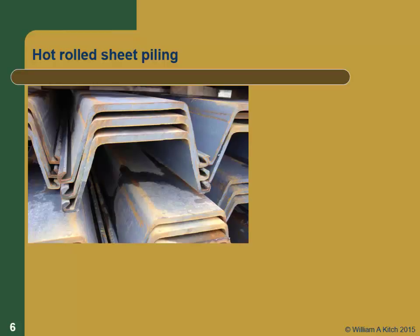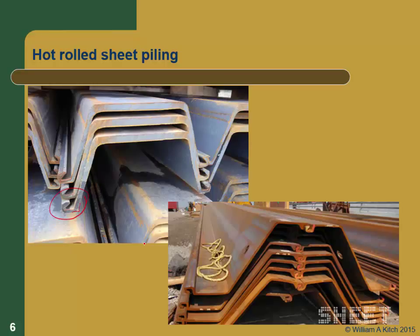These are pictures of hot rolled sections. You can see they have square corners and look a whole lot more robust. Here are some in the field, and you can see a different connection. All the connections are proprietary by the manufacturers. They're all some kind of connection design so they can join together and slide in and out of each other.